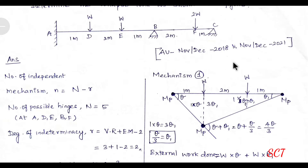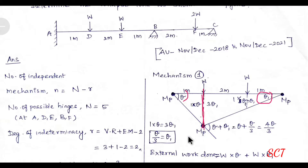This is a triangle. The span is 3 meters. So the distance is 1 into theta, 2 meters is 2 into theta, and 2 plus 1 is 3 meters. 3 meters into theta1 equals 3 theta1. So theta1 equals theta/3.